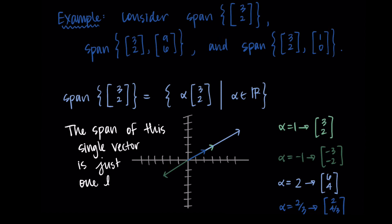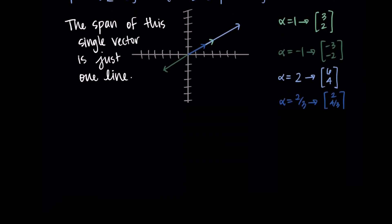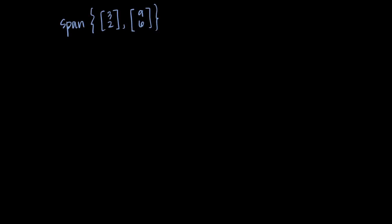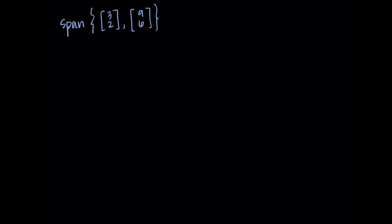So we can say that the span of this single vector is just one line, representing R. The important thing to highlight is that we can't get off of this line with just the one vector — this vector only lets us reach places on this line. Let's try an example where we add in another vector.